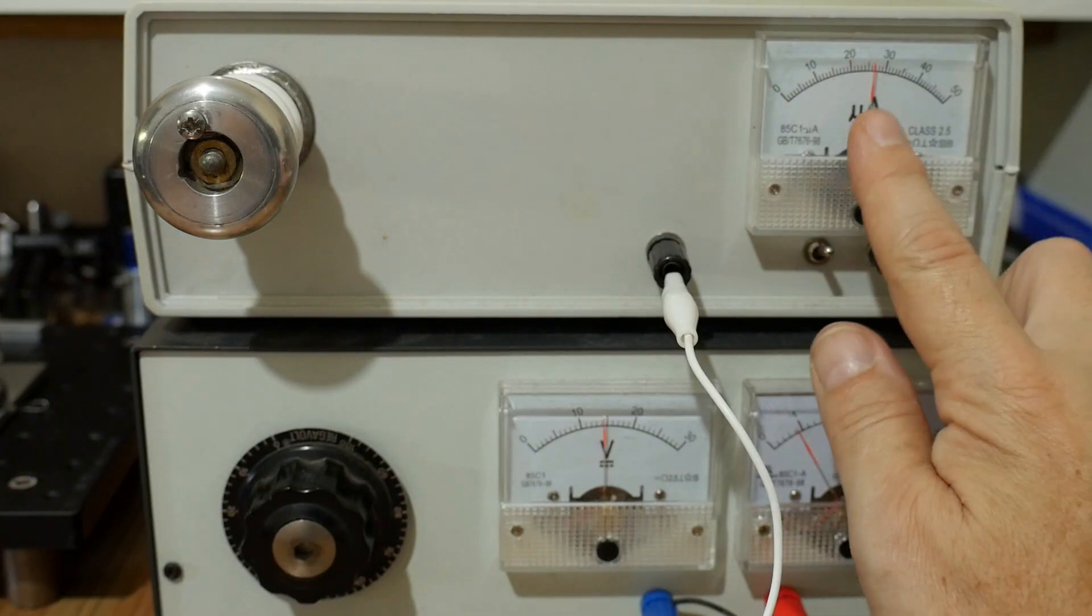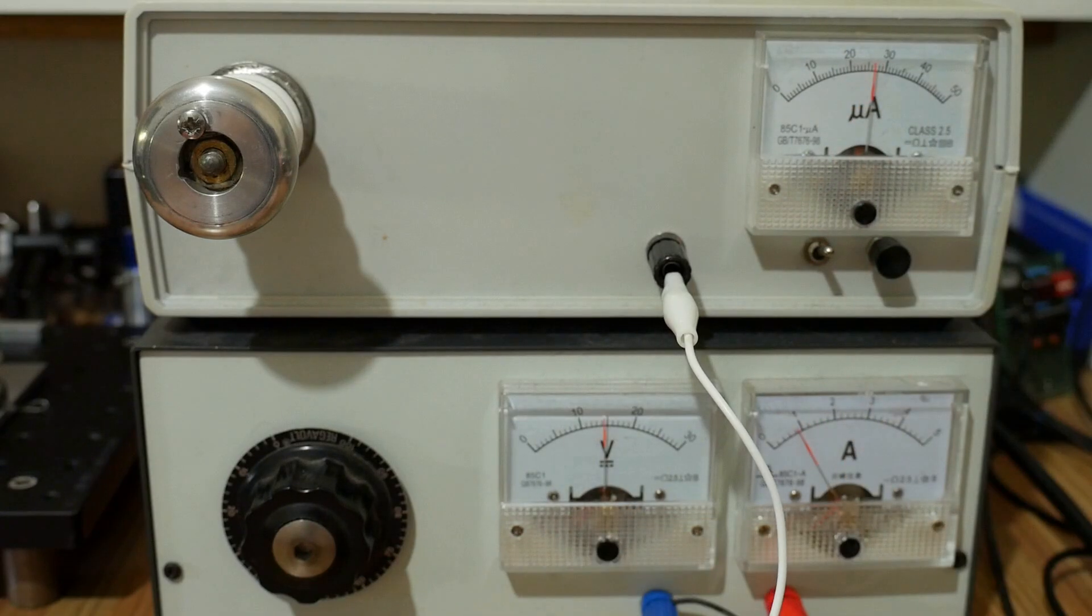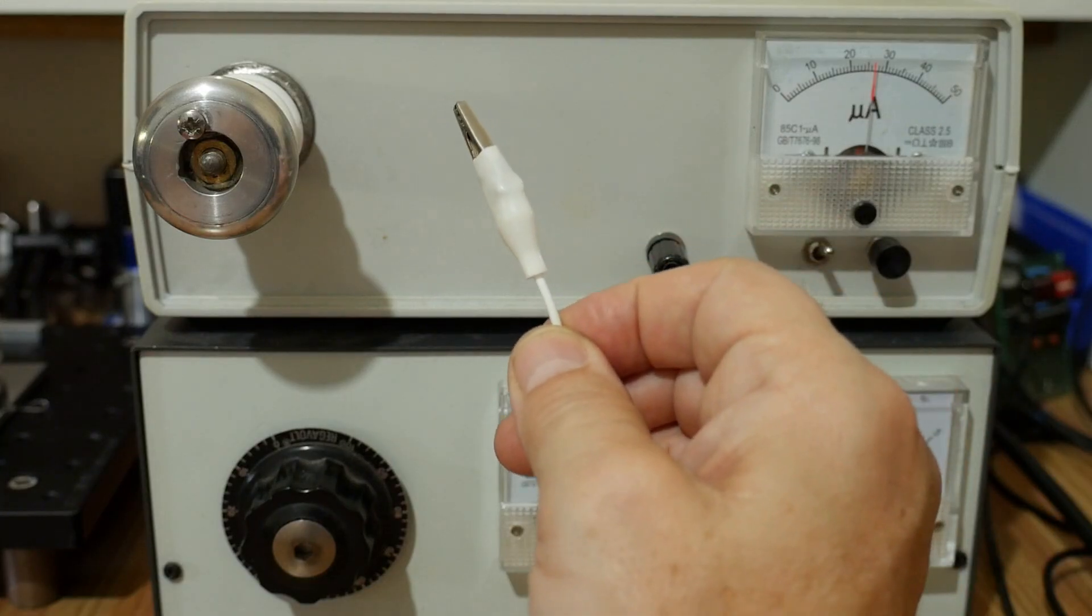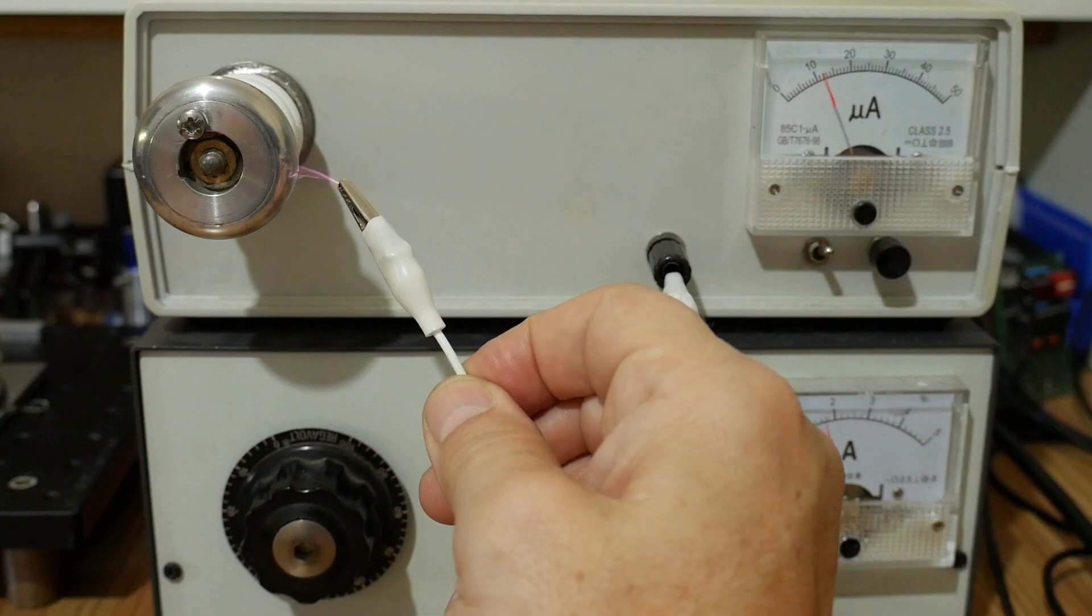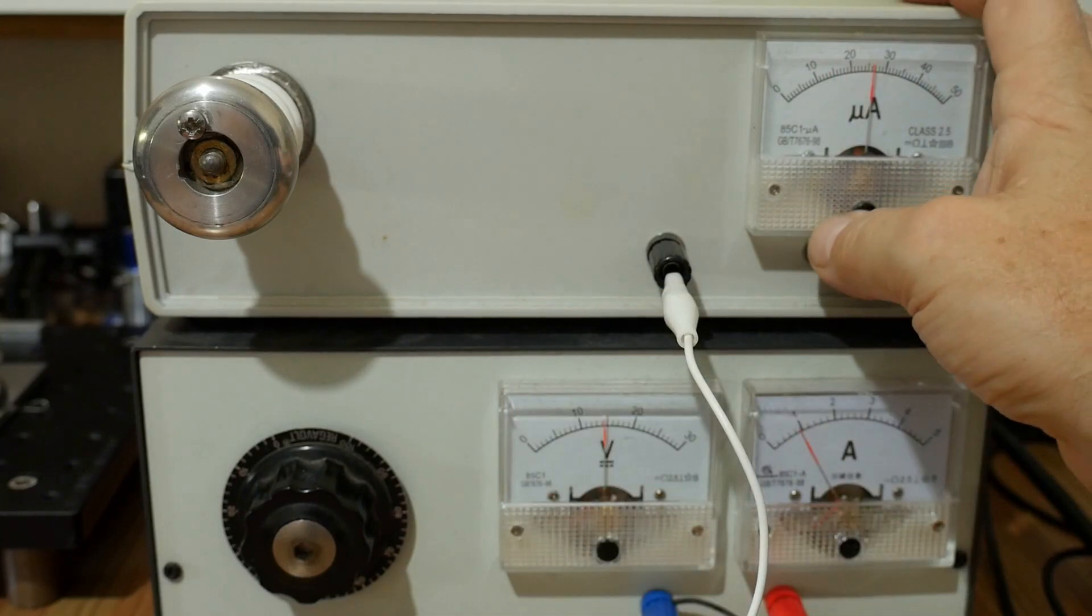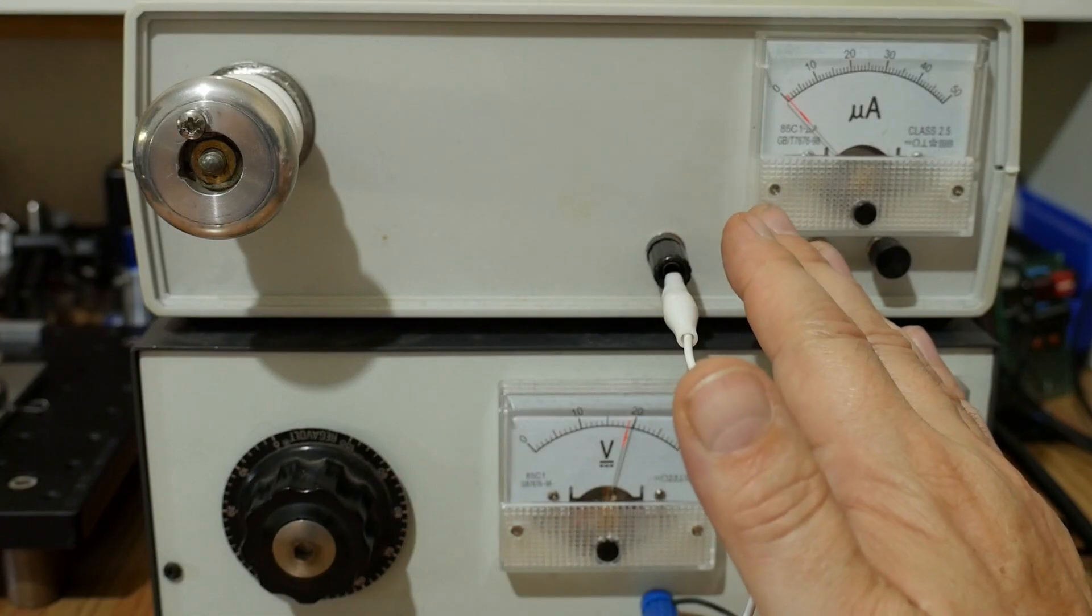And so if I turn the power supply on, we can see that the output voltage is about 26,000 volts. If I take the ground lead and approach the high voltage terminal, we'll see some little sparks. The output current is very low. This is deliberate. We don't actually need a lot of current to drive a Kerr cell.